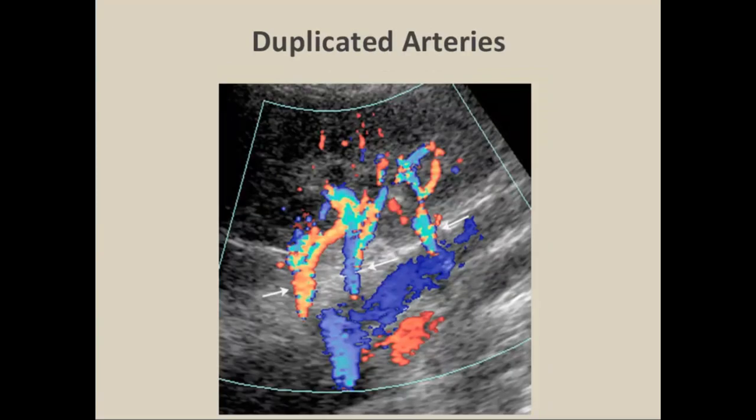It's important to look for duplicated arteries, which can occur in up to 20% of patients. We identify them by scanning through the kidney along a longitudinal projection, augmented with axial views, looking for multiple vessels. A key clue that you have duplicated arteries is when you see one artery going to an upper or lower pole — you must then assume there is probably another vessel supplying the other pole.